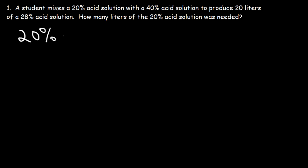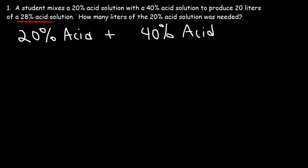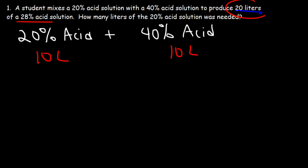Whenever you mix two solutions, the mixture is going to have a concentration that is in between the original two solutions. So as you can see, the mixture has a concentration of 28% acid, which is between 20 and 40. Notice the volume of the solution — after we mix the two, the total volume is 20 liters. If we mix 10 liters of the 20% acid solution and 10 liters of the 40% acid solution, that adds up to 20. If we mix an equal amount of these two solutions, the mixture should have a concentration somewhere in the middle — the average of 20 and 40, so it should be 30%. It's a weighted average.